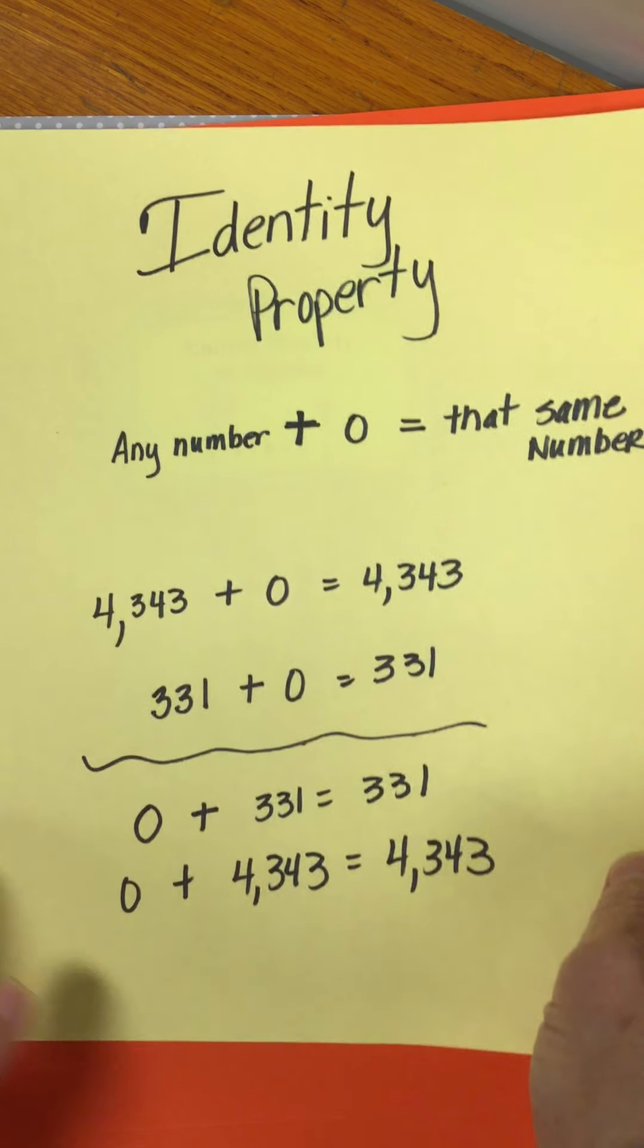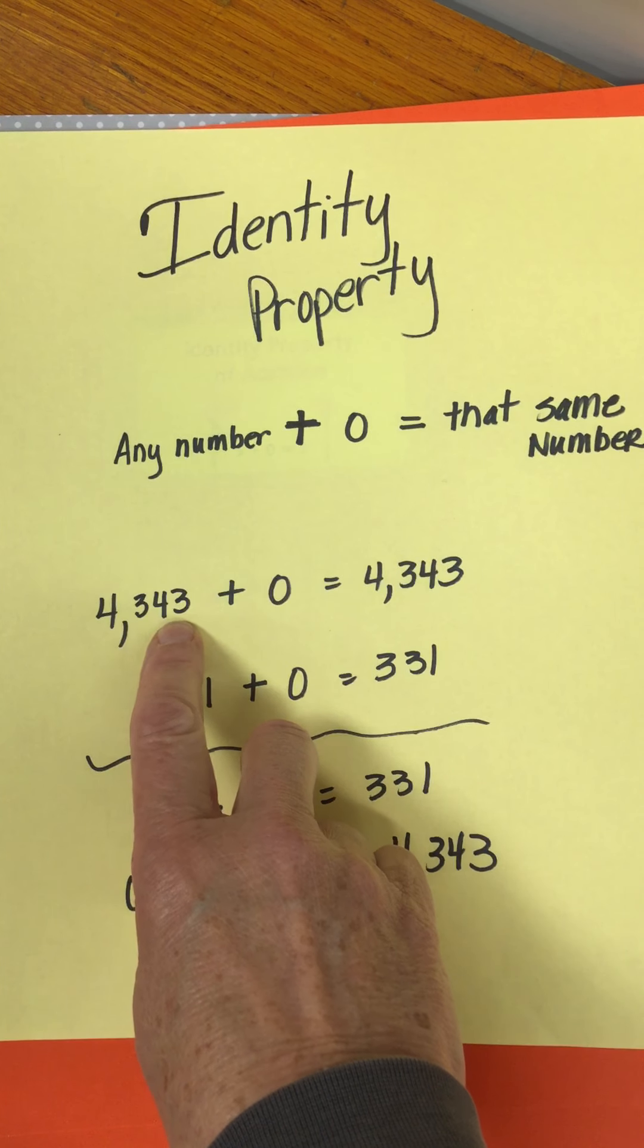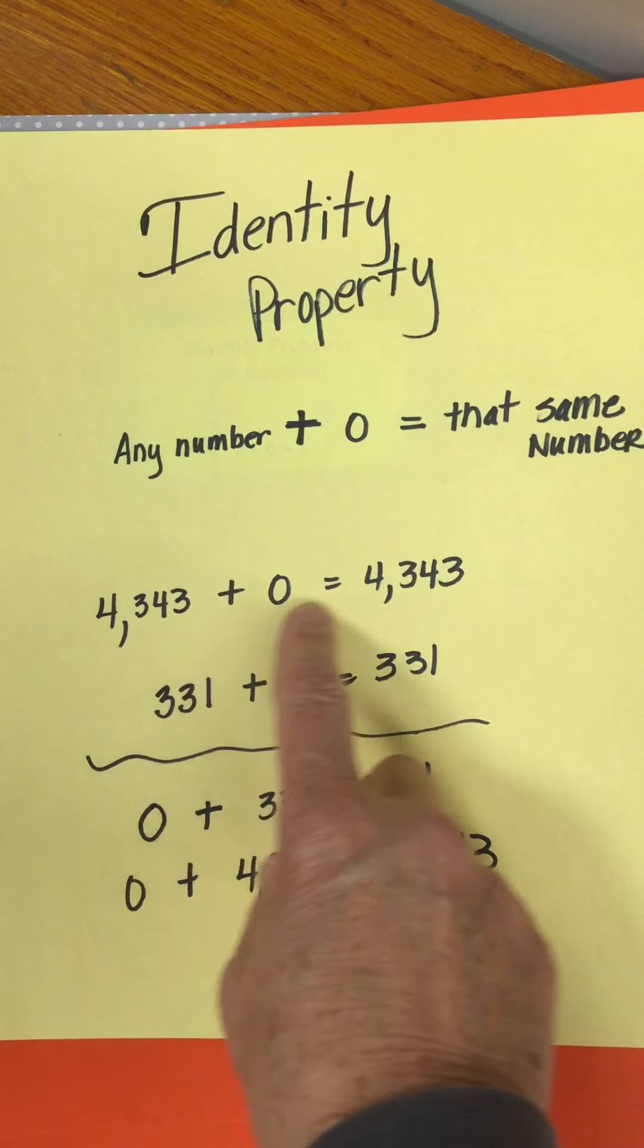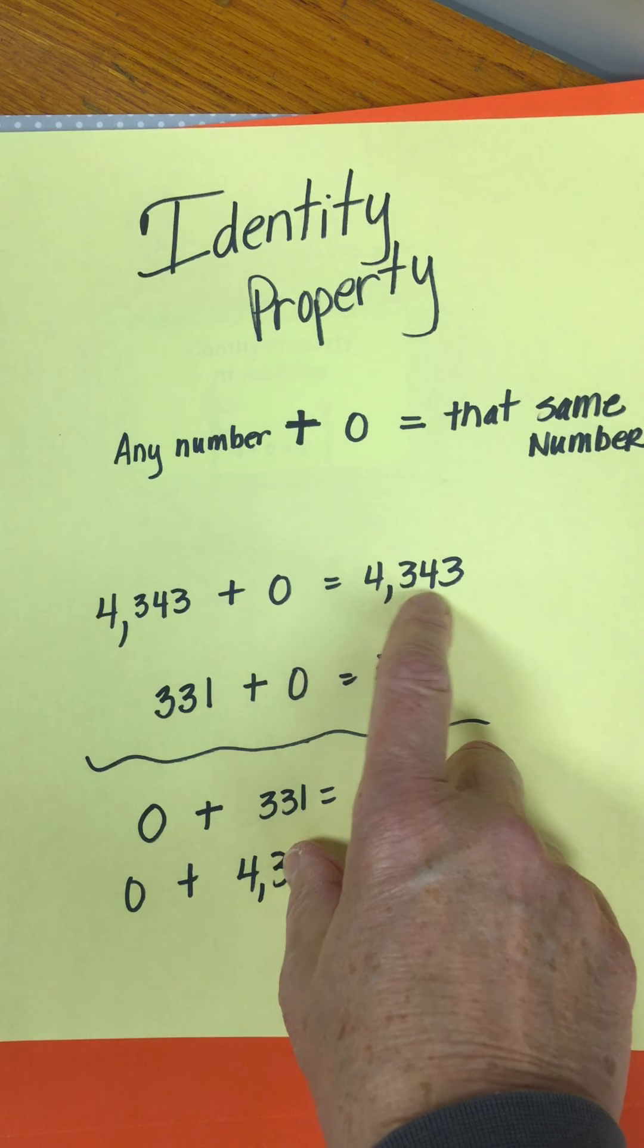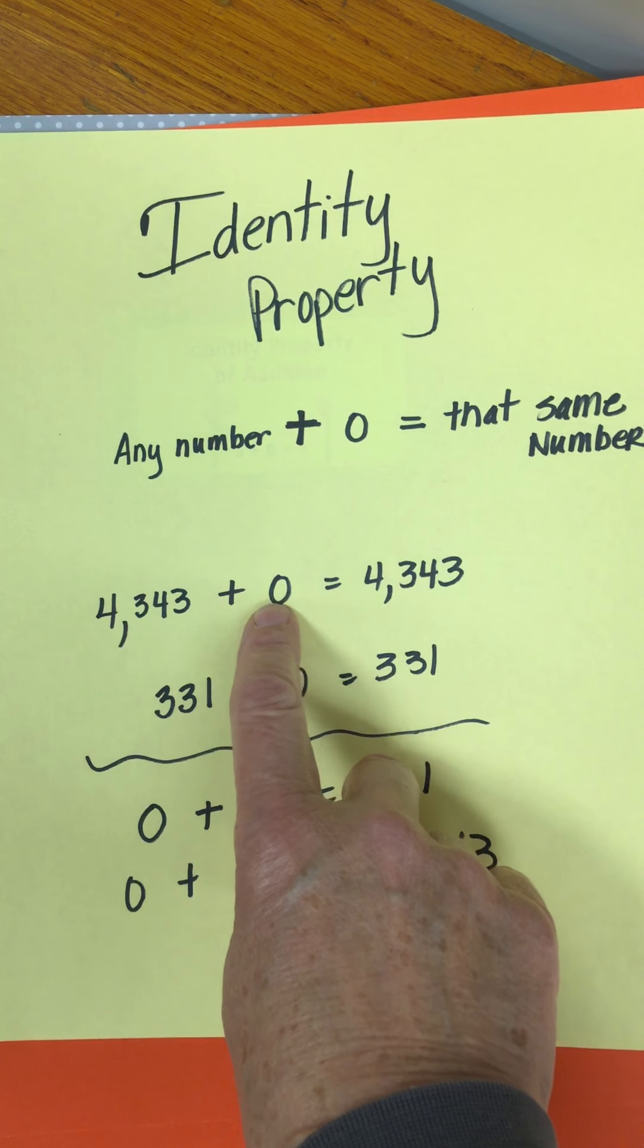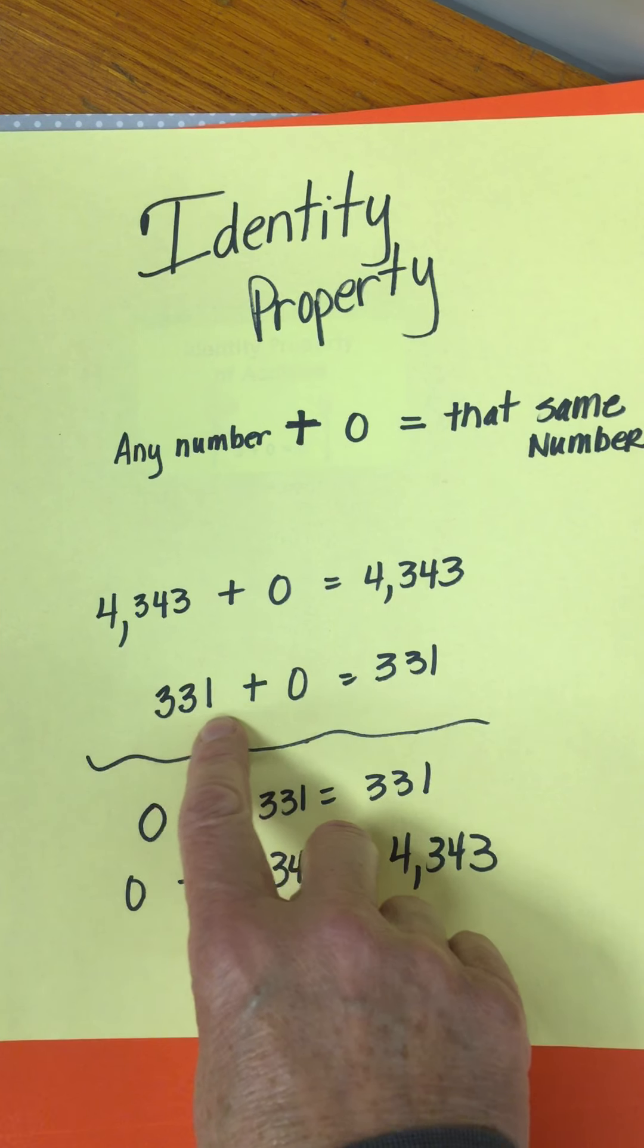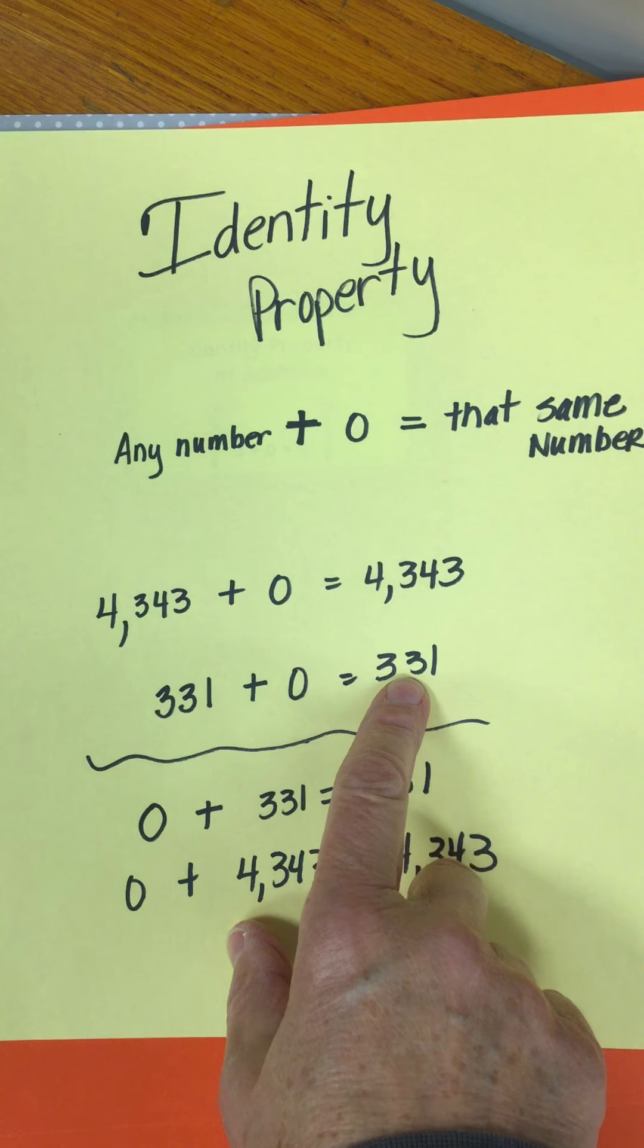So what the identity property says for us is any number plus zero is the same number. So I've got a couple examples for you. I try to use kind of a big number 4,343 plus zero would just equal 4,343, the number I started with because I'm not adding anything. I'm adding zero. Same thing here. 331 plus zero would just be 331.